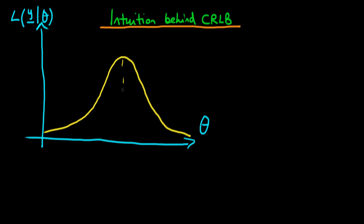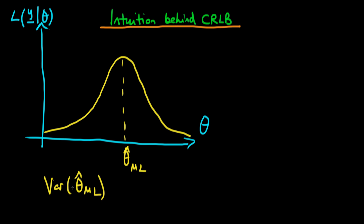We can see pretty quickly that the maximum likelihood estimator of the parameter is given by the value which corresponds to the maximum of this likelihood. This is the maximum likelihood estimator for that particular parameter. In inference, we're interested in determining what is the variance of our maximum likelihood estimator for the parameter, and how do we actually evaluate this.